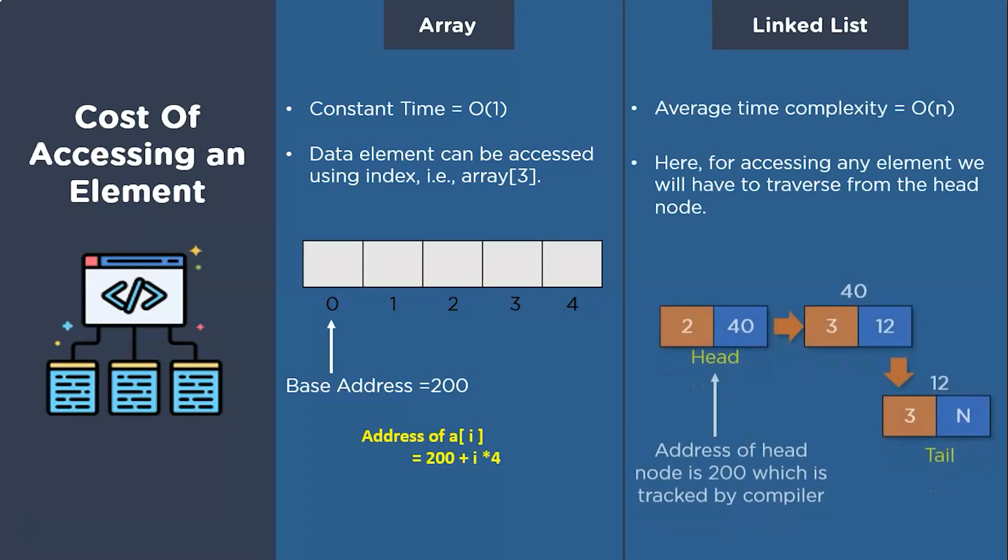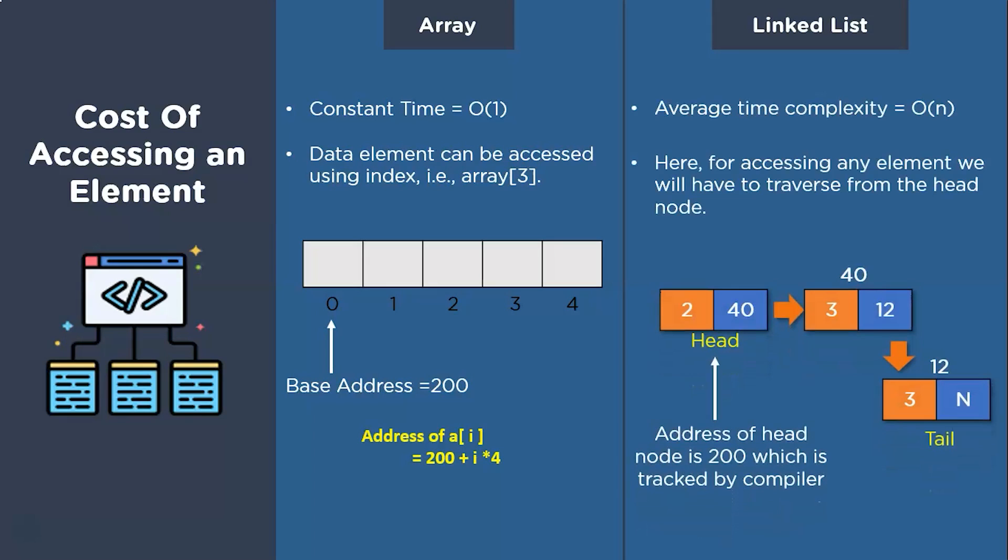And in the case of linked list, we have multiple blocks of memory at different addresses. Out of which our compiler just remembers the head node using the pointer variable. So in order to read any element out of this linked list, we will have to traverse all the elements until the element we are looking for gets found. Due to this, the average case complexity for accessing an element in a linked list is O(n).